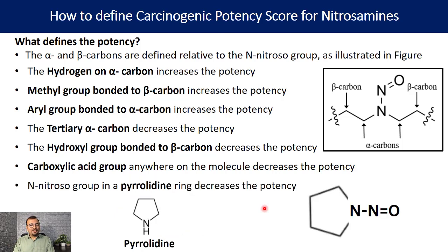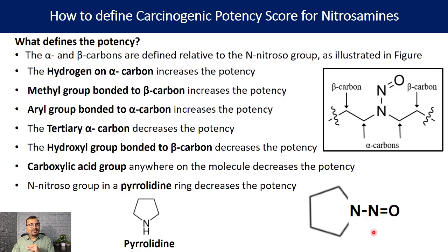Similarly, the presence of a pyrrolidine ring decreases the potency of the nitrosamine. An N-nitroso group in a pyrrolidine ring decreases the carcinogenic potency. If the nitroso group is connected to the nitrogen of the pyrrolidine ring, the carcinogenic potency of the nitrosamine decreases and you will have a higher acceptable intake limit.